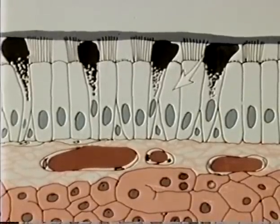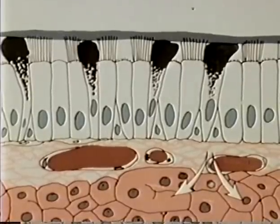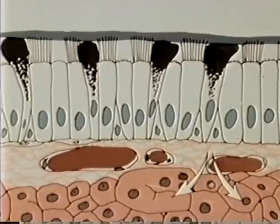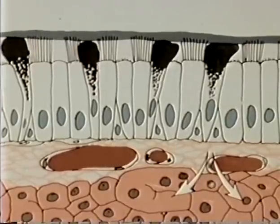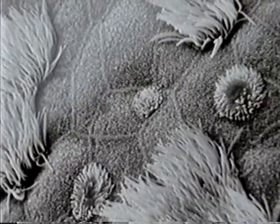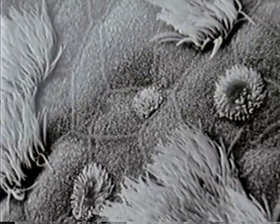Now let us look more closely at cilia. Here is a scanning electron micrograph of the surface of the rat nasal epithelium to show the cilia, which look like clusters of tentacles.